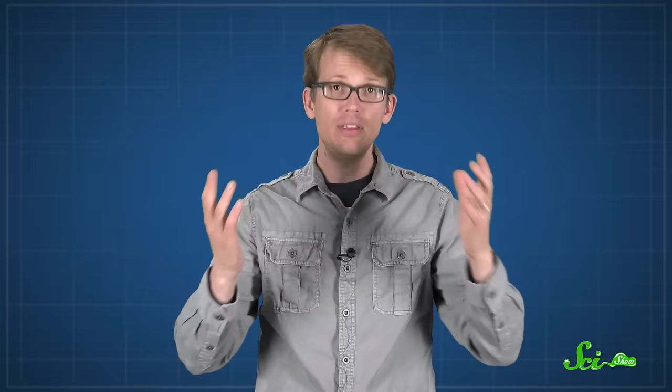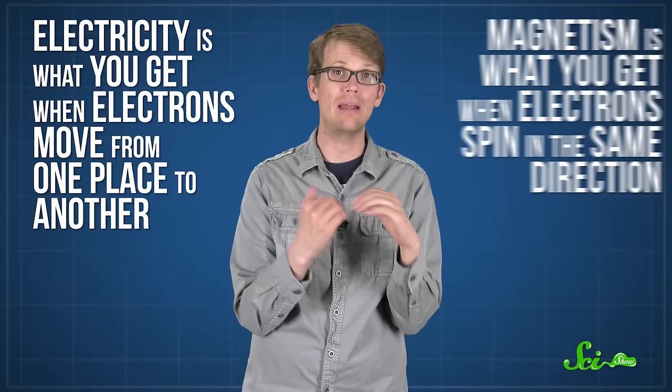These days, we know that electricity is what you get when electrons move from one place to another. And magnetism is what you get when electrons spin in the same direction. We also know that light is what you get when electrons move from a higher to a lower energy state. When they do that, they release a photon.